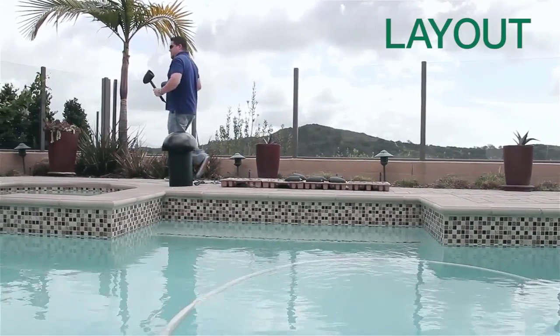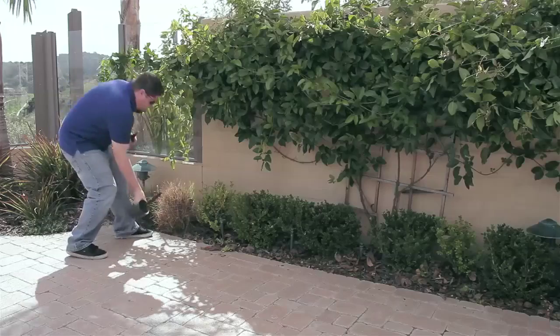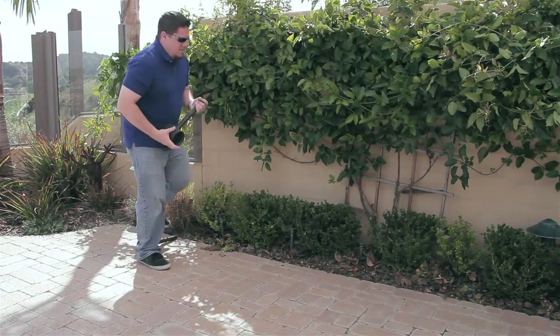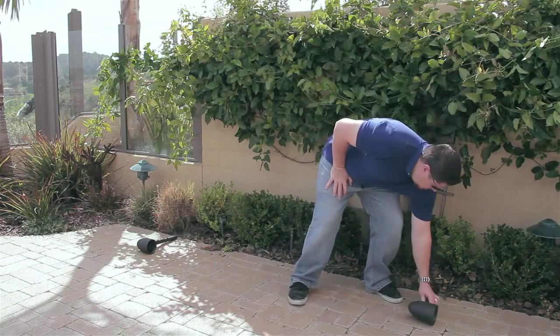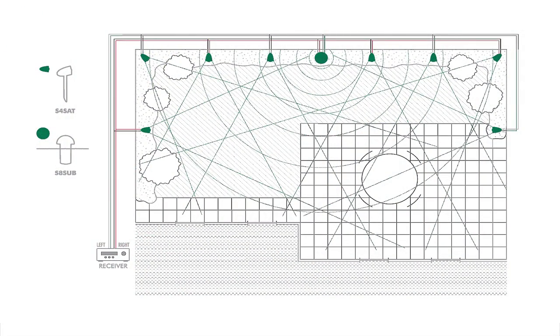The satellite speakers should be placed 6 to 8 feet, or 1.8 to 2.4 meters apart, for best coverage. To achieve the best balance between satellites and subwoofer, the subwoofer should be placed as close to the center of the satellites as possible.